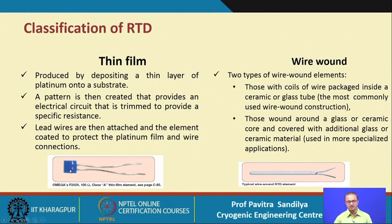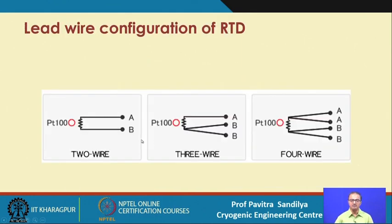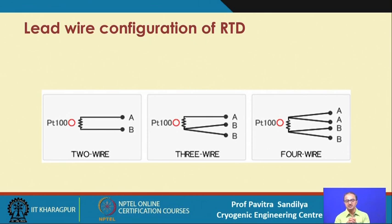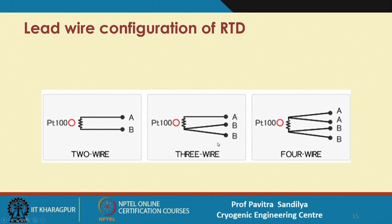In the wire wound type, the element is placed inside a long limb which can be inserted into the system, and lead wires are brought out from the end to measure temperature. Depending on the system, one of these two configurations is chosen. There are also two-wire, three-wire, and four-wire lead configurations. To nullify junction resistance effects, more than two wires are used — ranging from the simplest two-wire to the most accurate four-wire configuration.